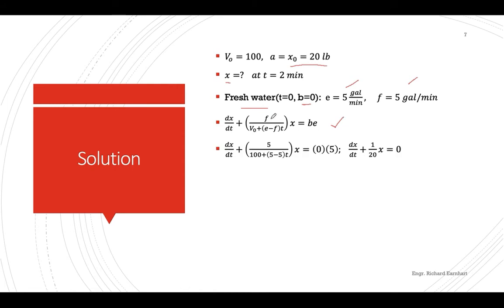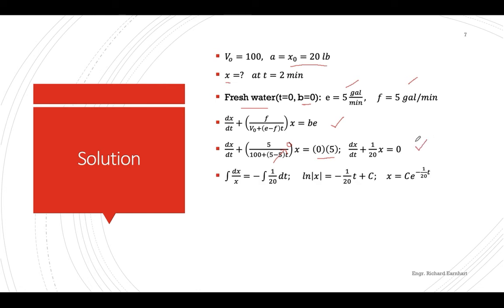Using the rate equation, substituting F equals 5, initial volume equals 100, E equals 5, and F equals 5, the rate-in term becomes zero since it is fresh water. This gives the equation which is variable separable, and can be transformed into dx/x equals negative 1/20 dt.